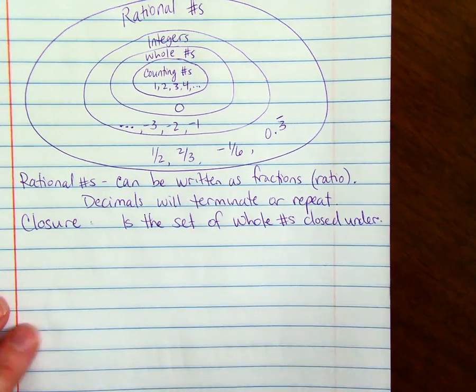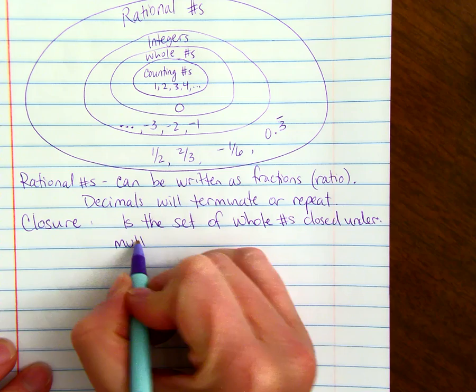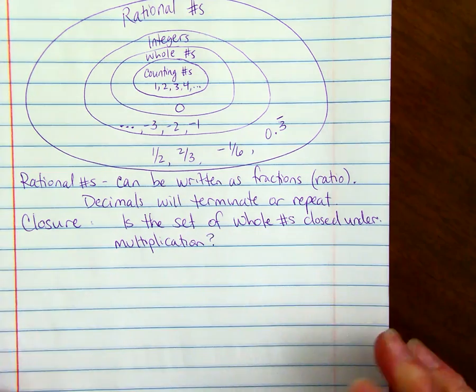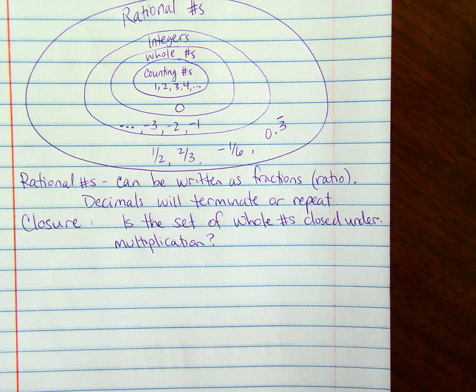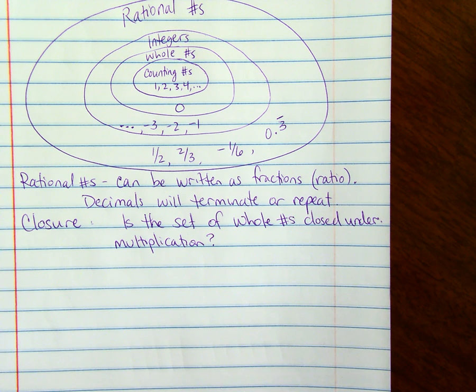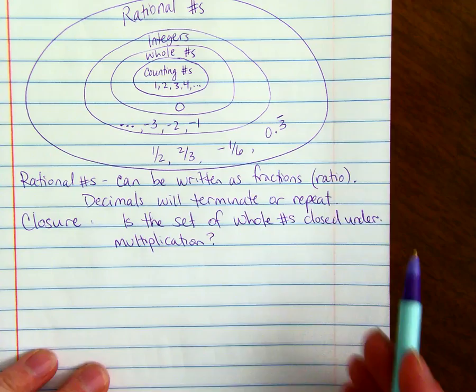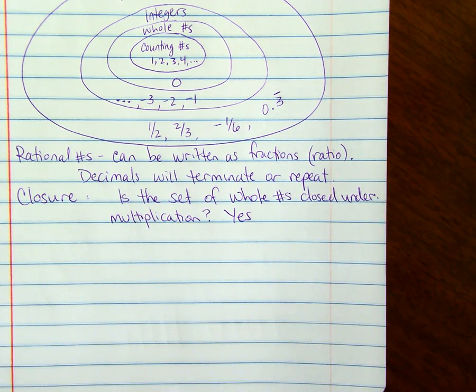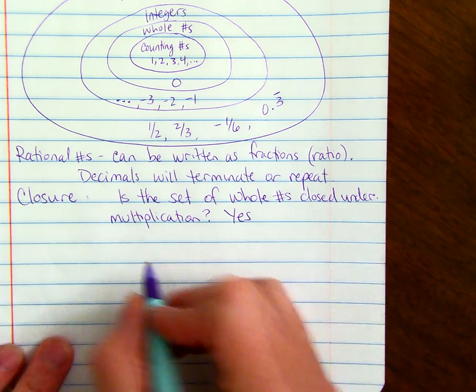If you take any two whole numbers and multiply them, do you still get a whole number? Would the answer be a whole number? The set of whole numbers is closed under multiplication, because if you take any two whole numbers and multiply them, you'll get a whole number for your answer.